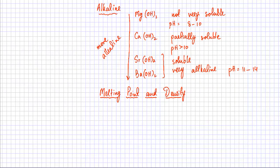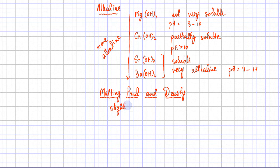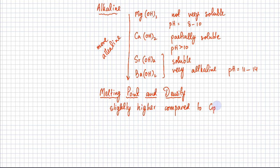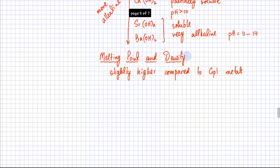Group 2 metals don't have very high melting points, boiling points, or densities, but their melting points and densities are slightly higher when compared to group 1 metals. Unlike group 1 metals, which float on water, all group 2 metals sink in water.